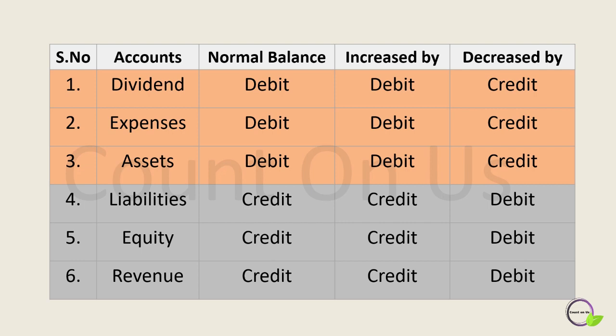Those six accounts are: dividends, expenses, assets, liabilities, equity, and revenue. The first three accounts are always debit balances normally, and the rest of the accounts are credit balances. We consider normal balances of accounts as the increase of those accounts.